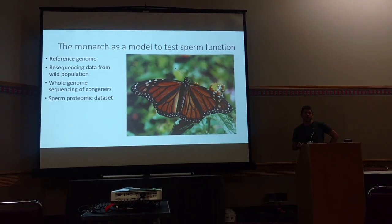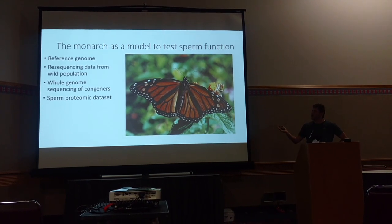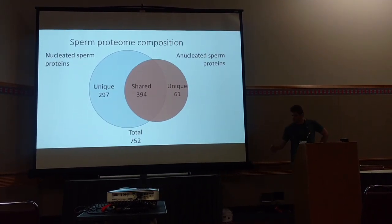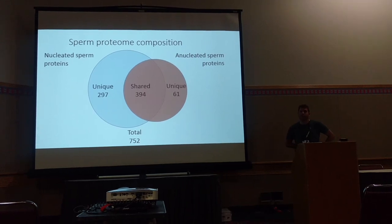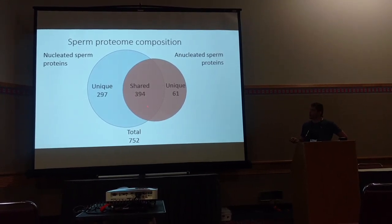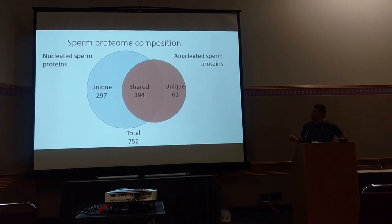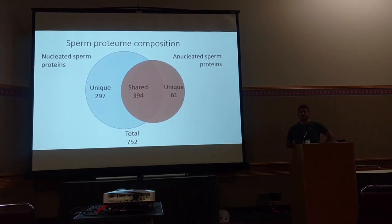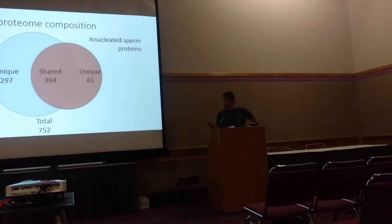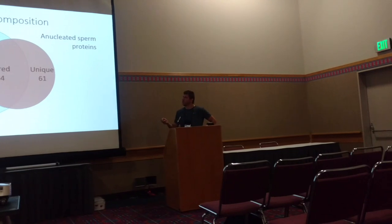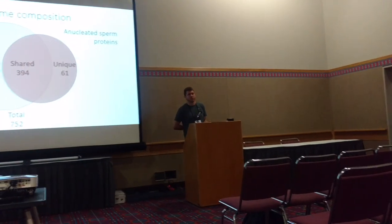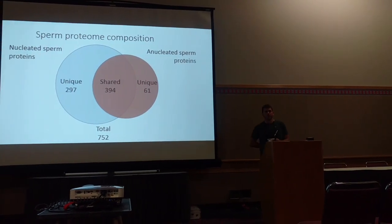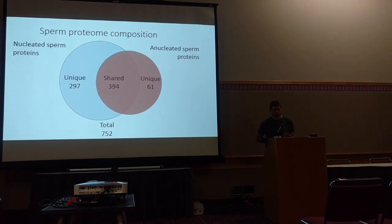Probably most important for us is the fact that the monarch is one of two Lepidoptera for which we have a sperm proteome, which looks something like this. It's about 750 proteins total between the two cell types, a lot of which are shared. But there's also a good 300 or so that are unique to the nucleated set, and another 61 or so that are unique to the anucleated or apyrene set. For this talk, we're going to do a gestalt whole-sperm proteome comparison against the genome background first, and then zoom into these two unique sets to see if we can find differences in selection pressures between them.